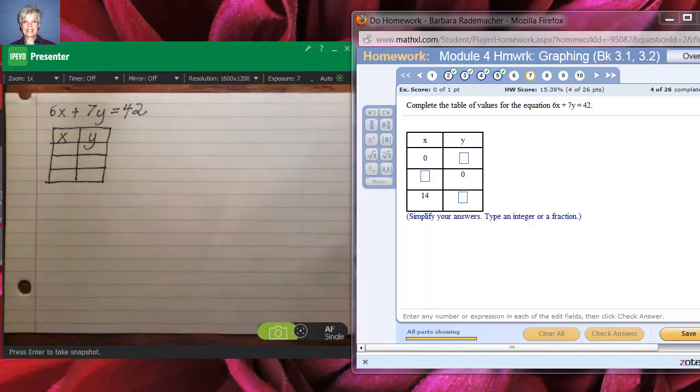Hi, this is Barbara Rademacher again and we're doing problem 7 from homework set 4 and what this is asking is for us to complete that table. Now what this table does is called an XY table, it's also called a T table.